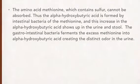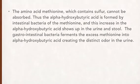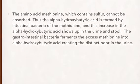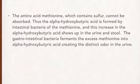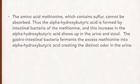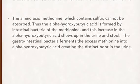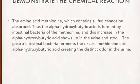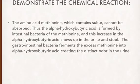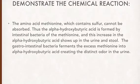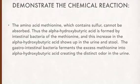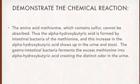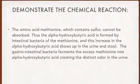Demonstrating the chemical reaction: the amino acid methionine, which contains sulfur, cannot be absorbed. Thus, alpha-hydroxybutyric acid is formed by intestinal bacteria from the methionine, and this increase in alpha-hydroxybutyric acid shows up in the urine and stool. The gastrointestinal bacteria ferments the excess methionine into alpha-hydroxybutyric acid, creating the distinct odor in the urine.